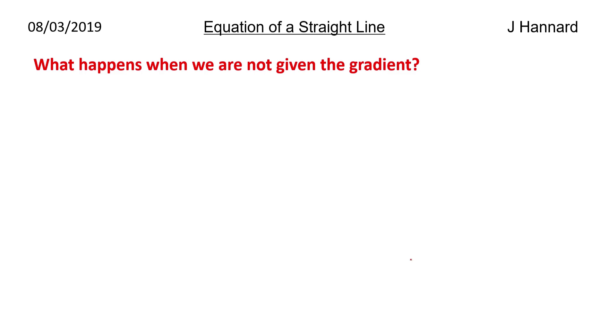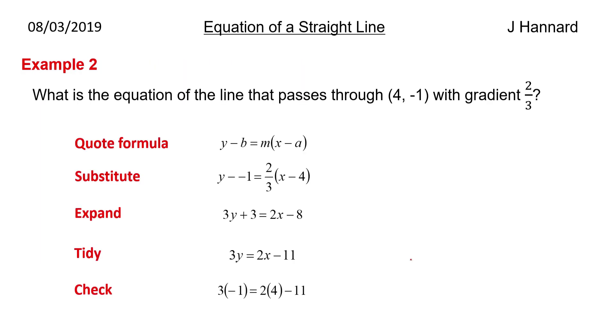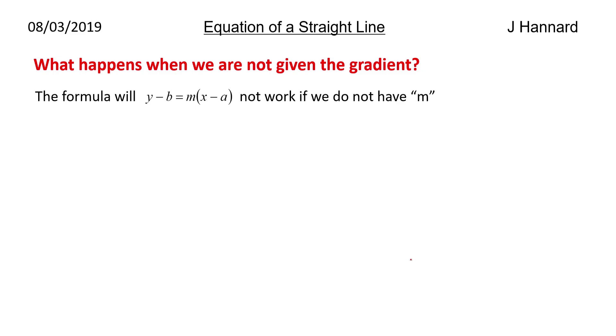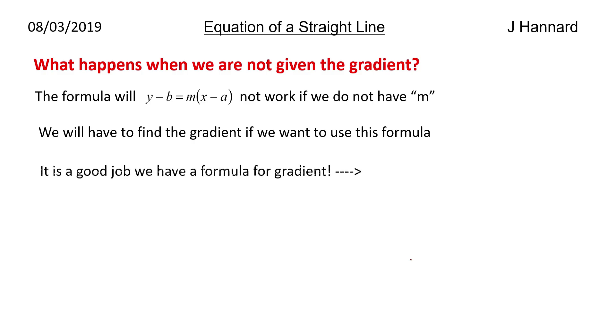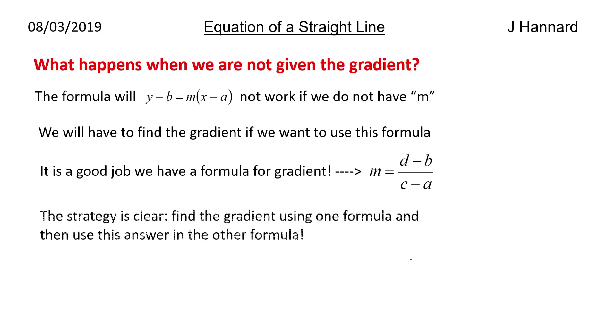But, what happens if we're not given the gradient? Well, we have a bit of a problem, we need a point and a gradient for this equation to work. We don't have m, we can give it in terms of m, but we don't have m, so what on earth are we going to do? We'll have to find the gradient if we want to use this formula, so it's a very good job that we have a formula for the gradient, which we've done in a previous lesson on this channel, and that is m equals back take back over front take front, if we've got two coordinates. So the strategy is clear: we find the gradient using one formula and then use this answer in the other formula.